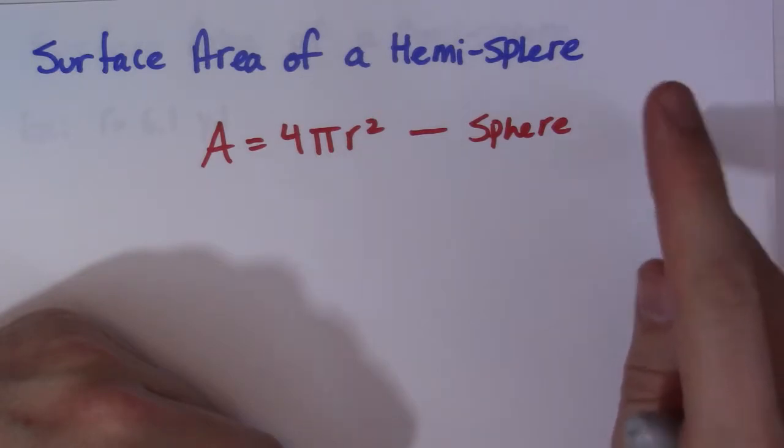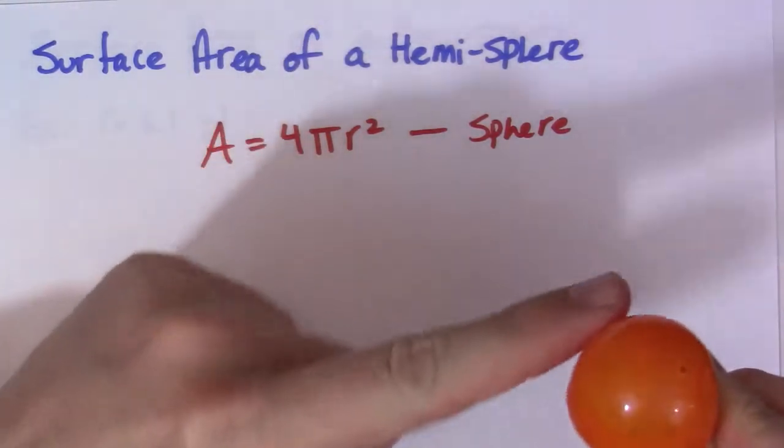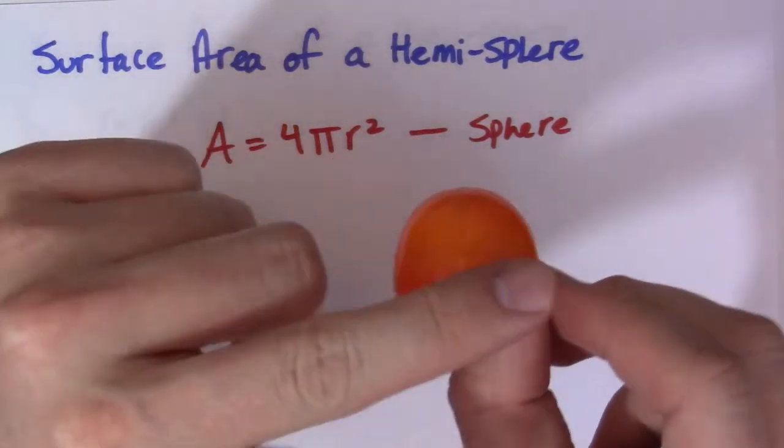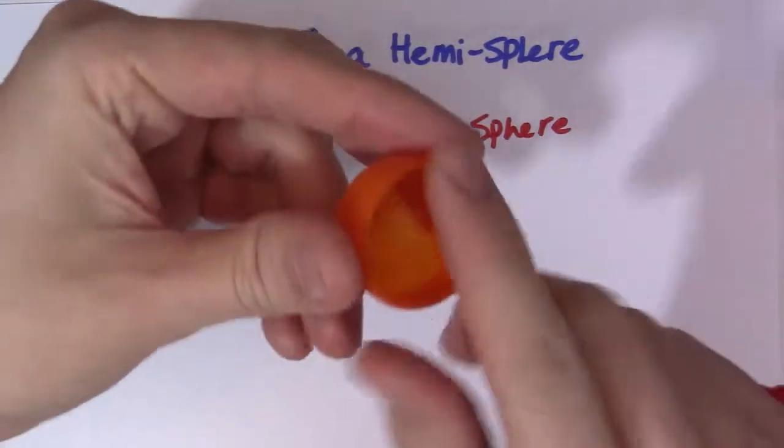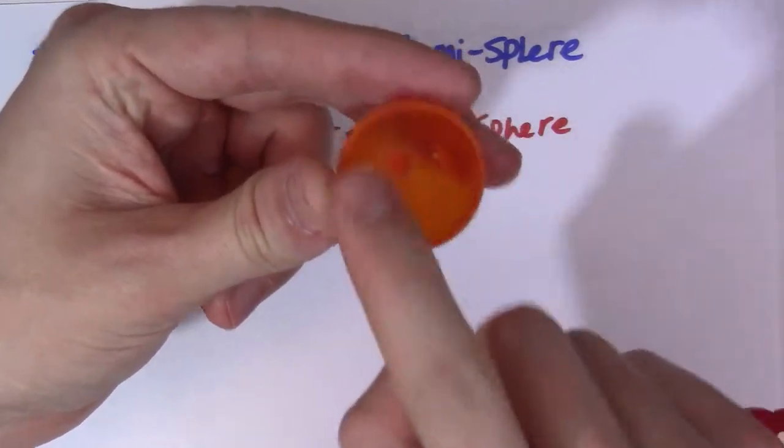With surface area you open up another part of the surface area. So we have half of the surface area that we would normally have with a sphere, this curvy part right here, but we also have this new flat part down on the bottom right here, that's a circle.